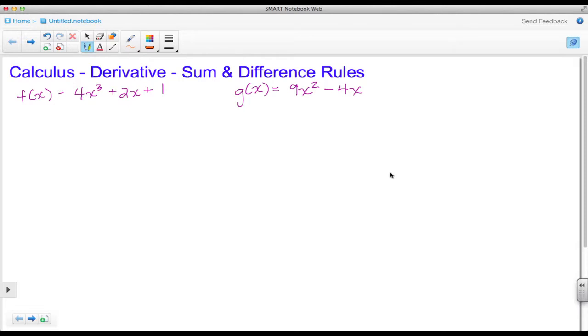Basically stated, the sum and difference rules just mean that if I were to take the difference quotient and use it on this entire equation, that would be the same as taking a derivative of this first term plus a derivative of the second term plus the derivative of the third term. The difference rule is the same thing. If I take the difference quotient of this whole equation, that would be the same as taking the derivative of this first term minus the derivative of this second term.